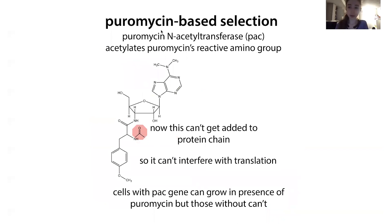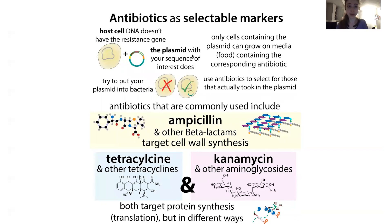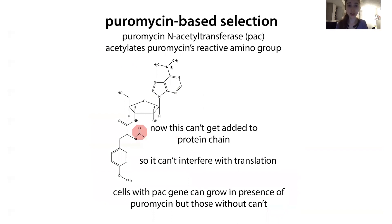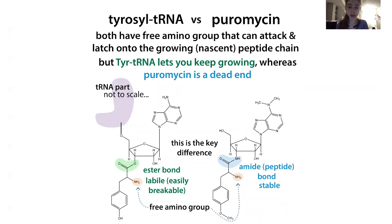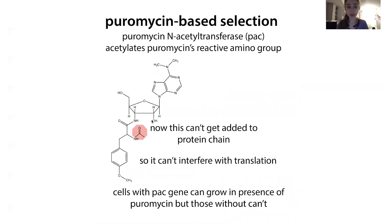Puromycin isn't really used in therapeutics due to toxicity issues, but it is used a lot in cell culture. You can make cells resistant to it using puromycin N-acetyltransferase, or PAC. What PAC does is it acetylates puromycin's reactive amino group. Going back to the structures, that free amino group is what allows puromycin to attack the growing chain — but if we block it, that can no longer happen. So the PAC enzyme blocks that free amino group by adding an acetyl group, meaning it can no longer interfere with translation. Only cells with the PAC gene can grow.